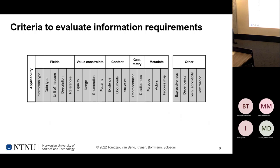Many of the use cases also wanted to have metadata, which provides the context of the information requirement — for example, who should be responsible for checking the requirement, who should deliver this information, for what purpose, and when. We also found other important aspects to evaluate standards, such as expressiveness — the breadth of ideas that can be described — dependency on shared semantic schemas, available technology, and governance, meaning which organization governs the method.